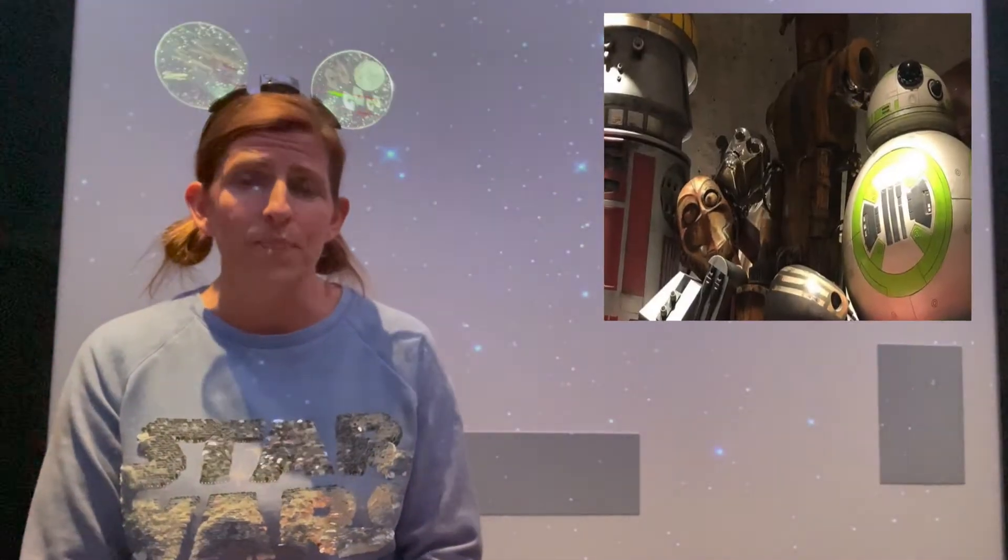For the Droid Depot, this is where you build your own droid, and you get to pick between two series: the BB series or the R series. And you get to pick your pieces off of a conveyor belt. It's a very fun thing to do, especially for the younger kids out there. It takes about four different pieces to put your droid together. Once you've done that, you get a remote control and you get to activate your droid, which is so awesome. There is a shop located right next to there that you can add more accessories to your droid if you'd like to do that. They also have some pre-made droids for sale if you'd rather just buy one that's been already made for you.